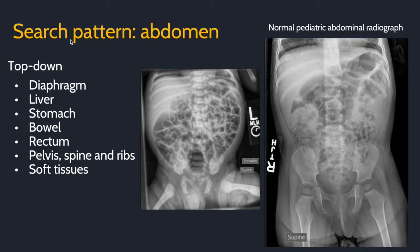For abdominal radiographs, a top-down approach works. You can start at the diaphragm, look at the liver border, the stomach, the bowel in general, the rectum, the pelvis, spine, and ribs, and the soft tissue surrounding it.